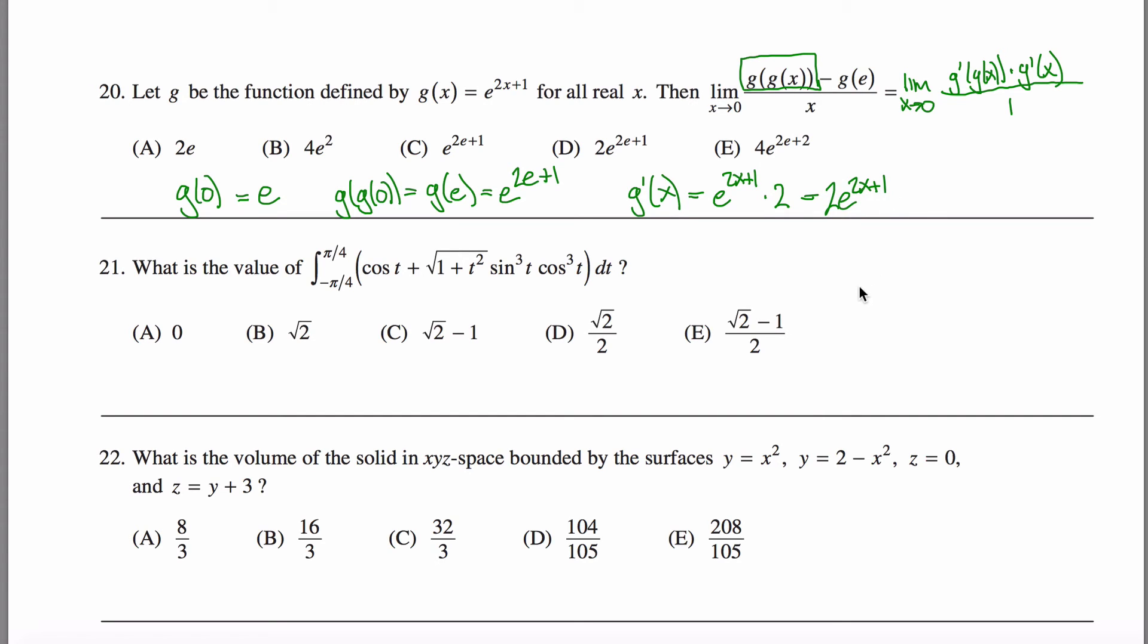So then I want to figure out g prime of g of x. Remember the limit as x approaches zero, so I'd like to change all of the x's into zero. g prime of zero is just take this thing and change all the x's into zeros, so I got 2e to the first power, aka 2e.